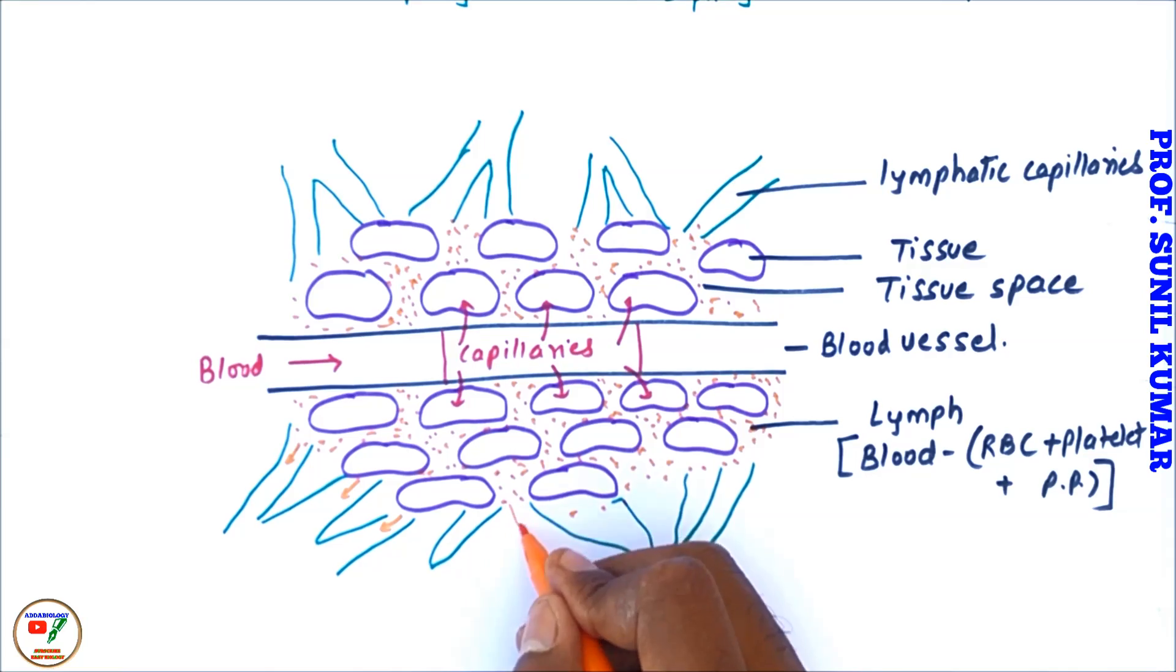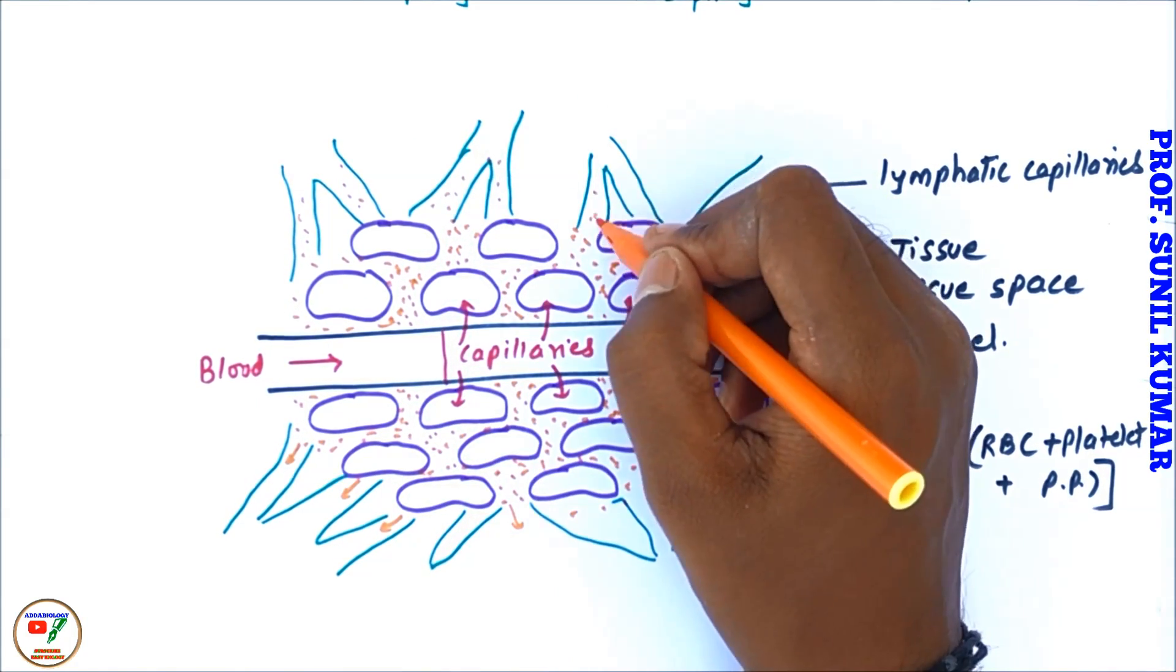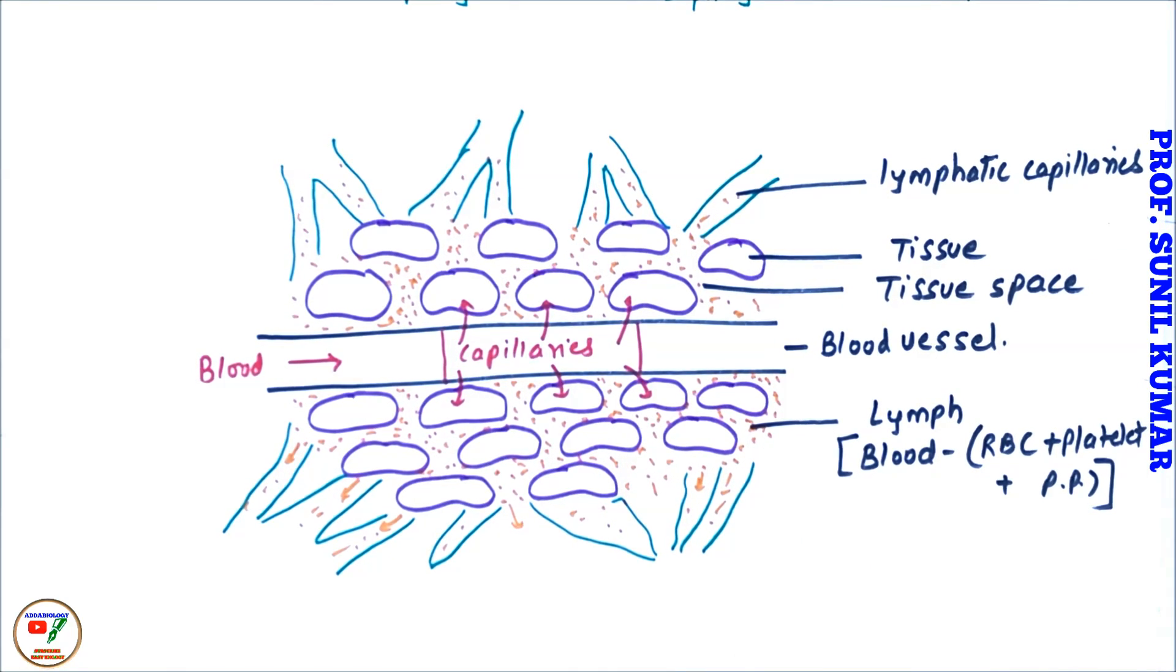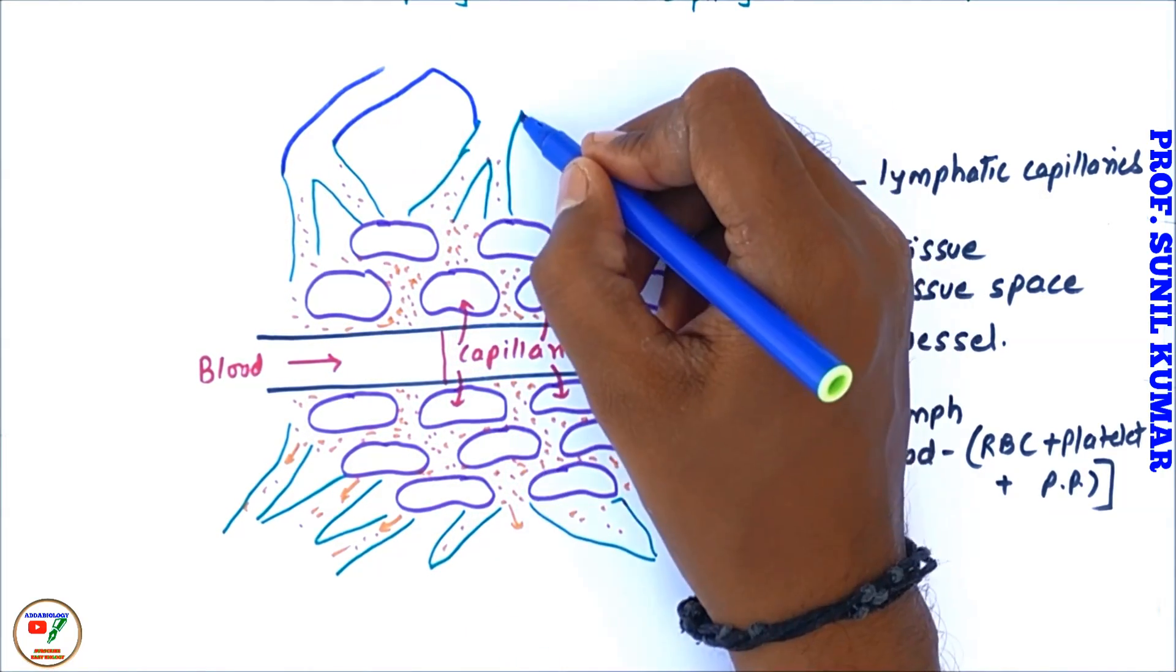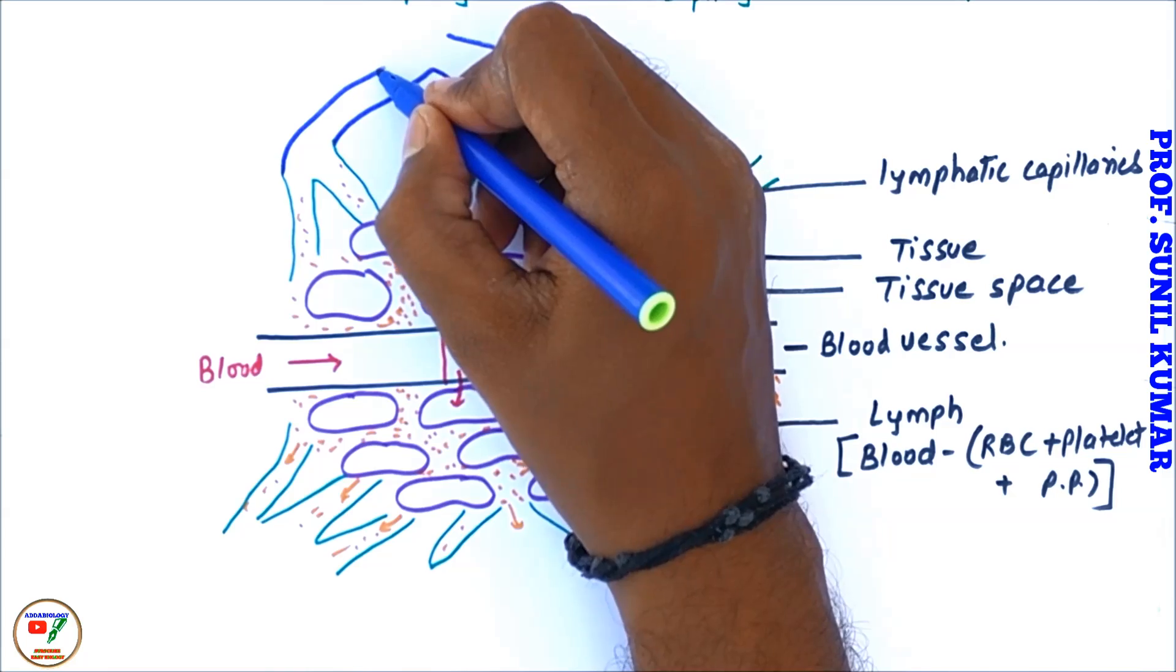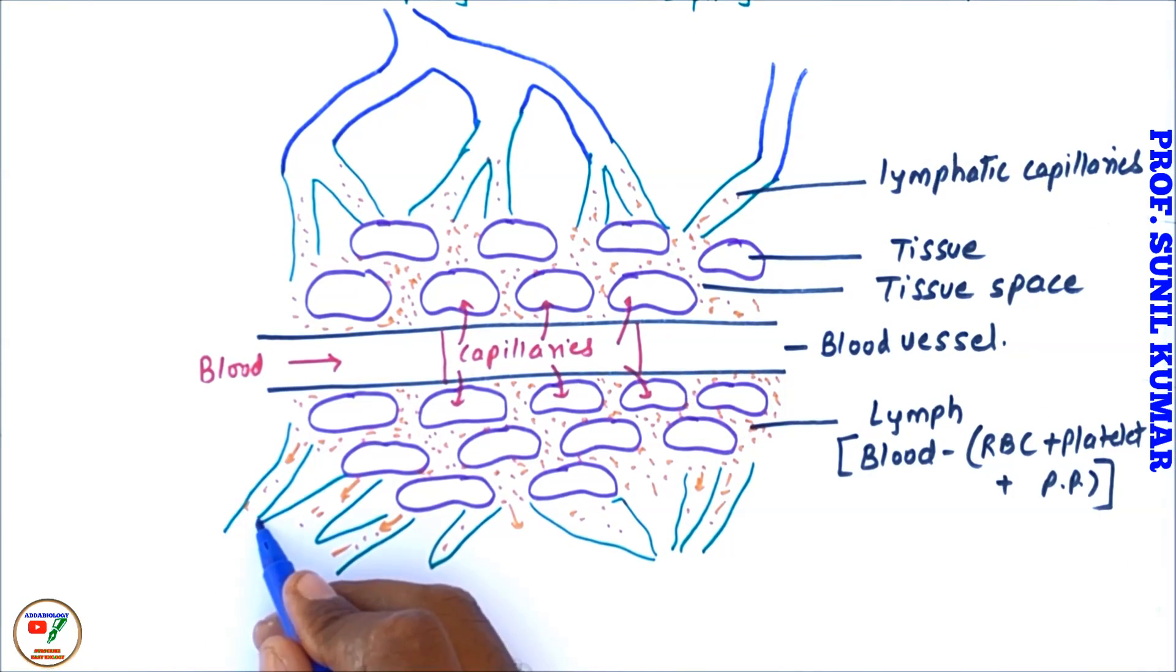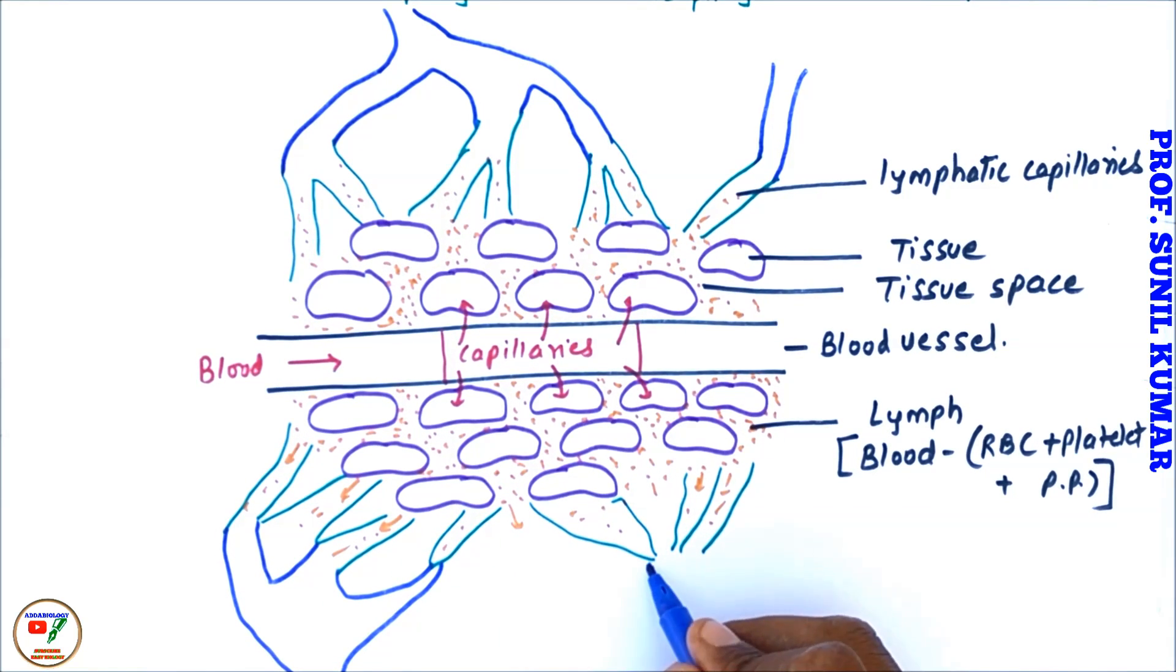Lymphatic capillaries, they will unite together and they will form a duct and that duct is called lymphatic duct, most important. So let us see, these are all the lymph which is getting accumulated in the capillaries. Now it is the duct which we are drawing and now all the ducts they are going to meet. So many capillaries they meet together and they form the duct which is called lymphatic duct.